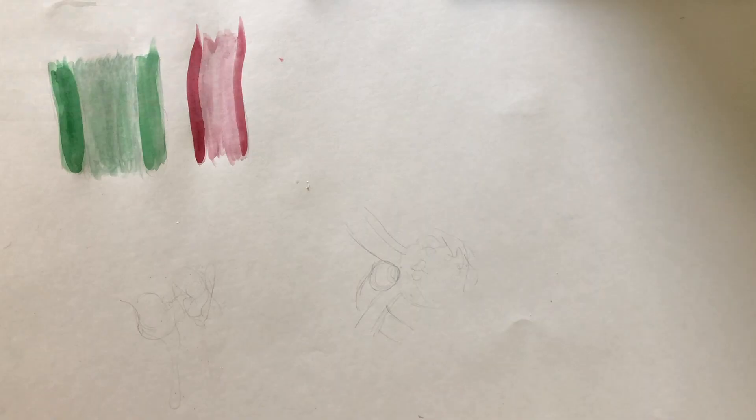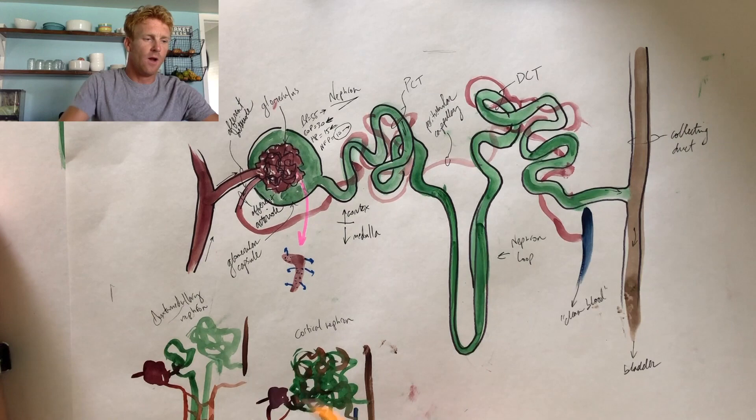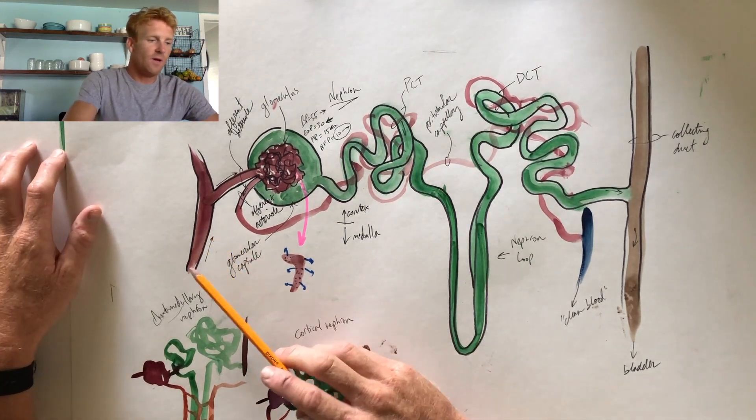Welcome back. Today I wanted to talk about some details of exactly how the nephron does its job — how it's able to filter the blood and reabsorb the good stuff, but also how those processes are controlled. A little bit more detail about how the nephron works. As a quick review, this is what we talked about in the last lecture.